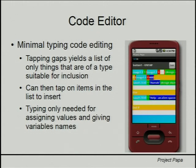Tapping on blank spaces yields a list of options that you can insert in that position, and it's only things that are particularly suited to go there. For example, in the uppermost space next to the plus sign, if you tap that, you will only be able to add integer fields or things that evaluate eventually to an integer. Therefore, every program that you write in this will automatically be typed correct. You only have to type to add particular values or name variables.